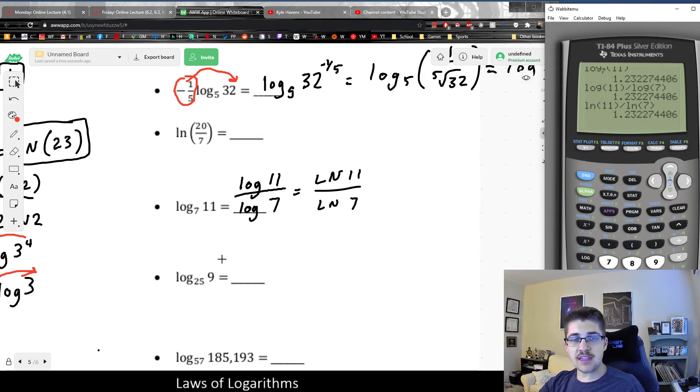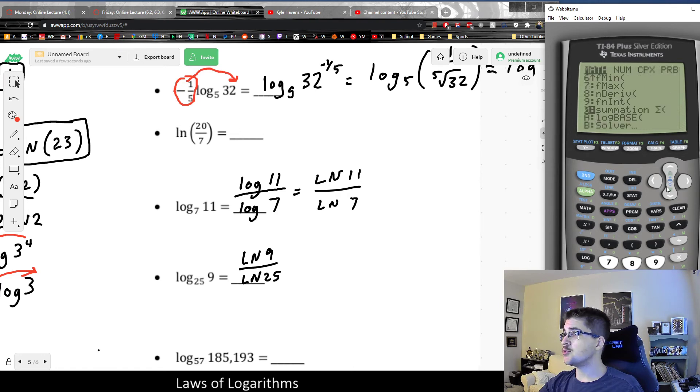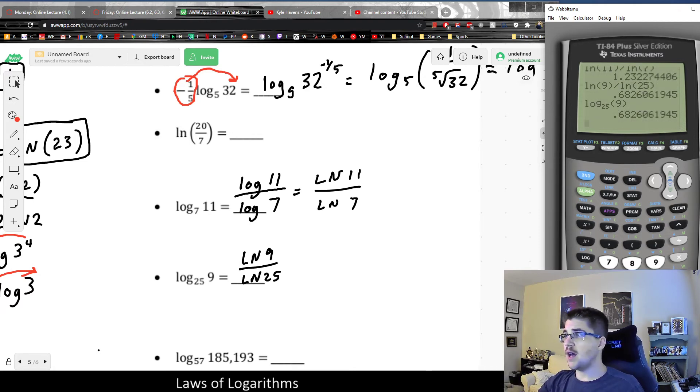And looking at the next one, the thing to remember is it's not always about the bigger number on top, it's always just about the input on top. So we would have the natural log of the input divided by the base. And it is a little bit stranger when the input is smaller than the base, but that's totally fine. It would just mean that we're going to have a fractional answer. And if we look at what this would give us, we get approximately 0.68, but it should be equal to log base 25 of 9 because that change of base formula always is good to go.